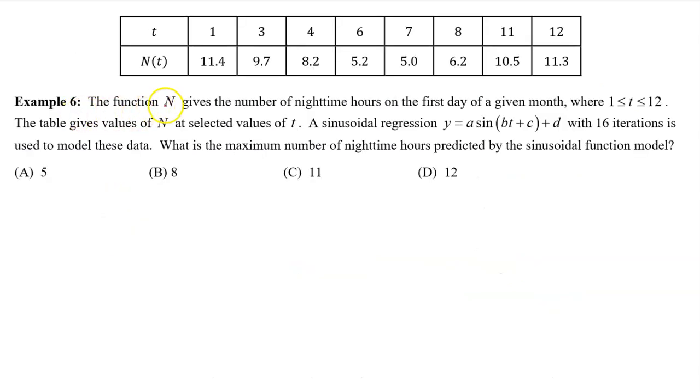Example 6: The function n gives the number of nighttime hours on the first day of a given month on the closed interval from 1 to 12. The table gives values of n at selected values of t. A sinusoidal regression y = a sin(bt + c) + d with 16 iterations is used to model these data. What is the maximum number of nighttime hours predicted by the sinusoidal function model? To make the sinusoidal regression model, we need to start by typing this data into a table on the calculator.